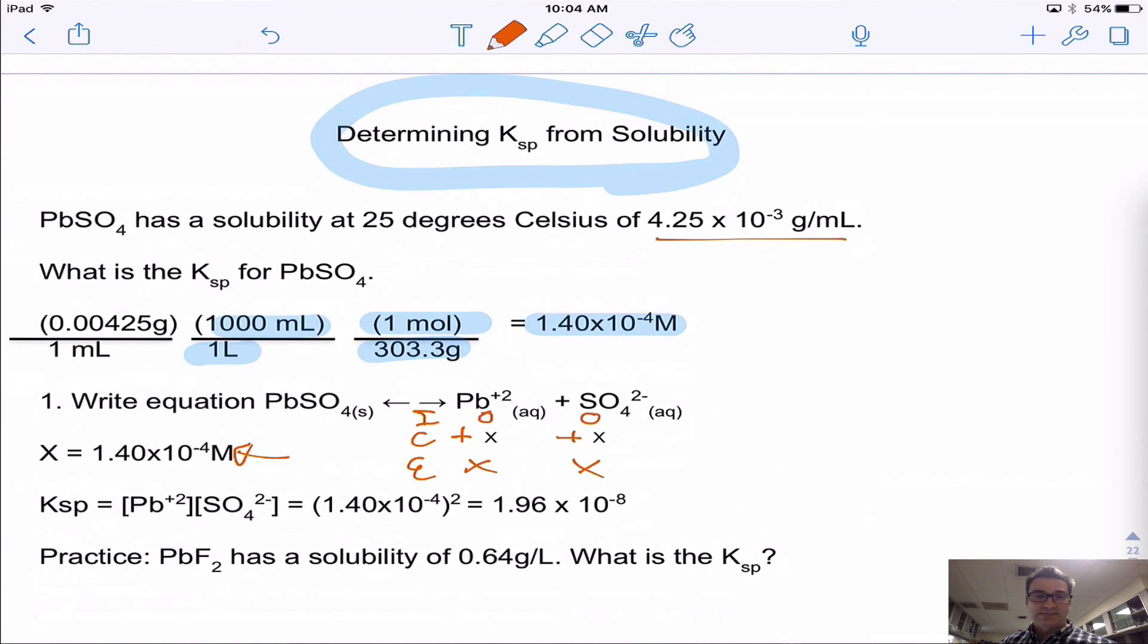Now I do a simple ICE table, which I show down here. This is my E column. It started at zero. I then do plus X and plus X, and at equilibrium I will have X and X. I already know what X is because I solved for it up top here, and now I can just plug that into my KSP, which is X times X, or X squared, and I can get my KSP value. Notice again, no units for KSP.